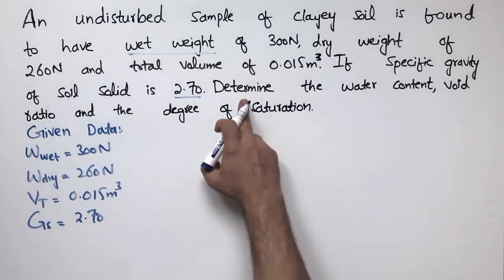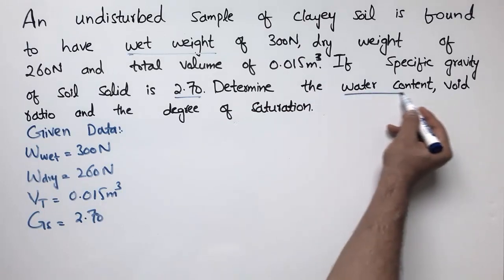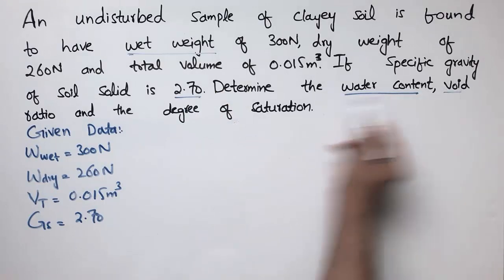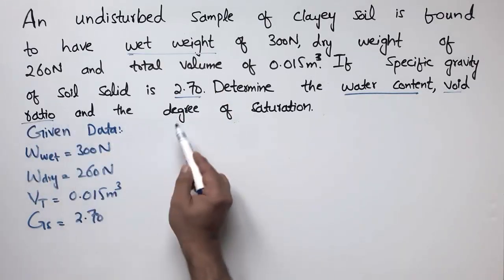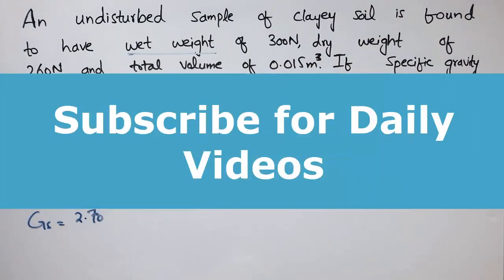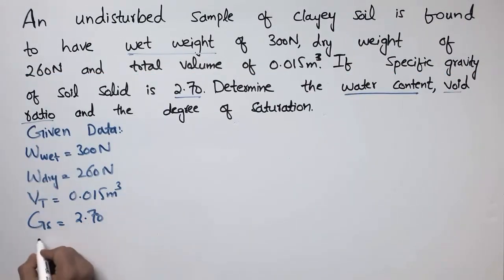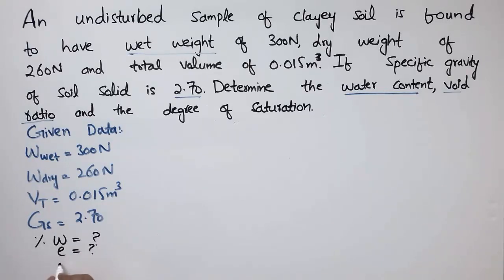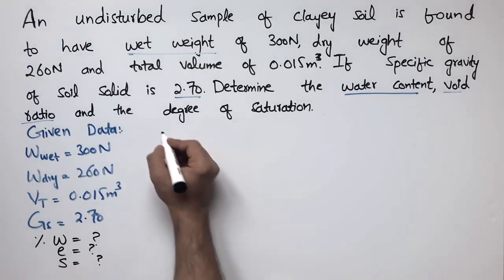These are the known parameters. Now we are going to find: first, the water content — how much water is present in this soil mass; second, the void ratio E; and third, the degree of saturation S. We will find each one by one.